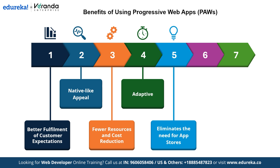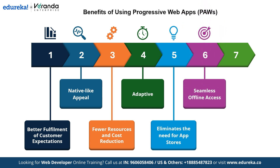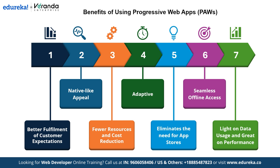Progressive web apps also eliminate the need for an app store - users can add them directly to their home screen, skipping the hassle of searching and downloading apps from a store. One standout feature is their ability to provide seamless offline access. Even without internet connectivity, progressive web apps use cached data to keep the app functional, ensuring users never lose access to important features. Finally, they are incredibly efficient - progressive web apps are light on data usage and deliver excellent performance, making them ideal for users in areas with limited connectivity or slow networks.